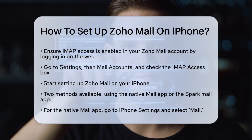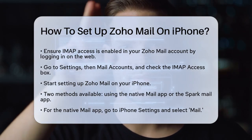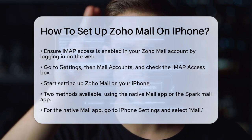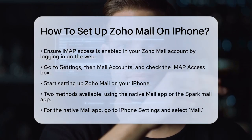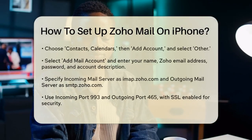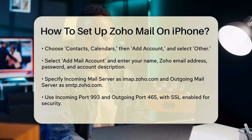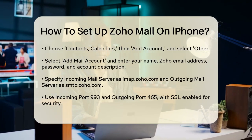Using the Native Mail app. To set up Zoho Mail using the Native Mail app, go to your iPhone Settings. Navigate to the Mail section, then select Contacts, Calendars, and choose Add Account, followed by Other.